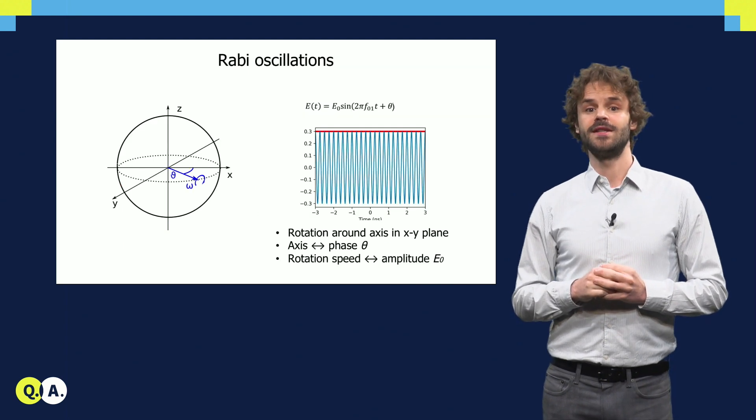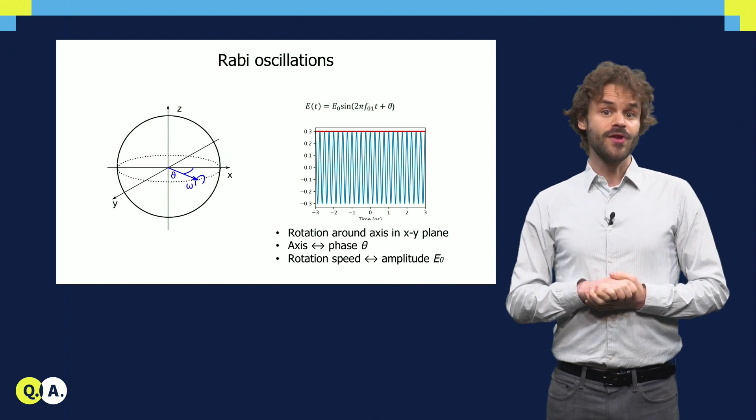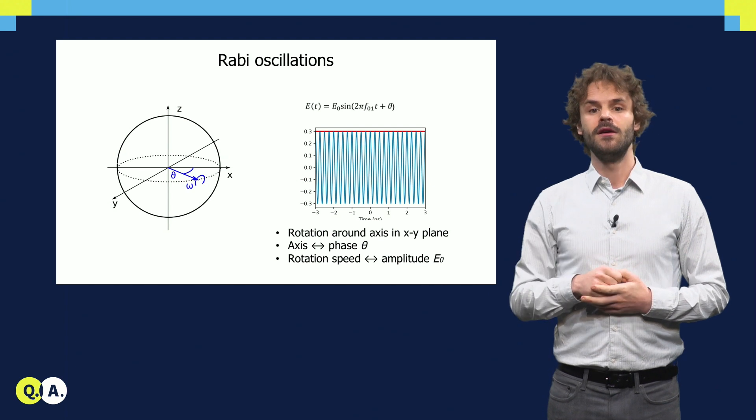Let's see how the oscillating field affects the qubit state. When we apply it, it drives the qubit from the ground to the excited state and back. On the Bloch sphere, this looks like a rotation with constant speed.